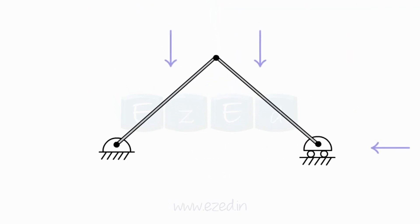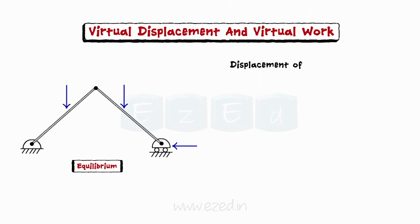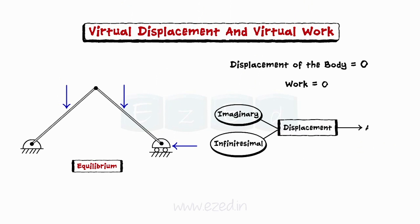We will learn about virtual displacement and virtual work. When a system of forces act on a rigid body in equilibrium and the displacement of the body is zero, then no work is possible, but an imaginary infinitesimal displacement is assumed to be given to the body in equilibrium. Such a displacement is called virtual displacement.